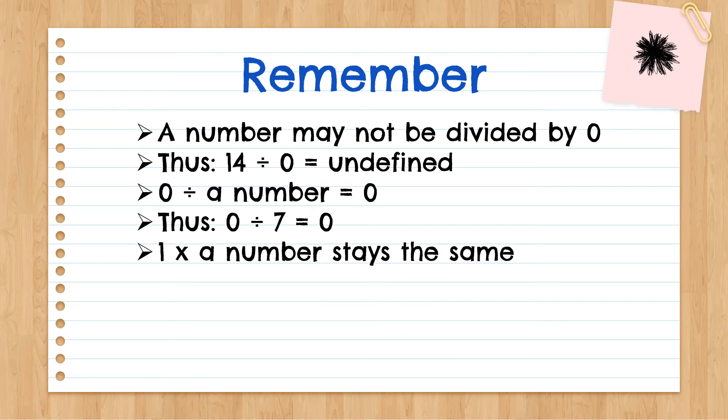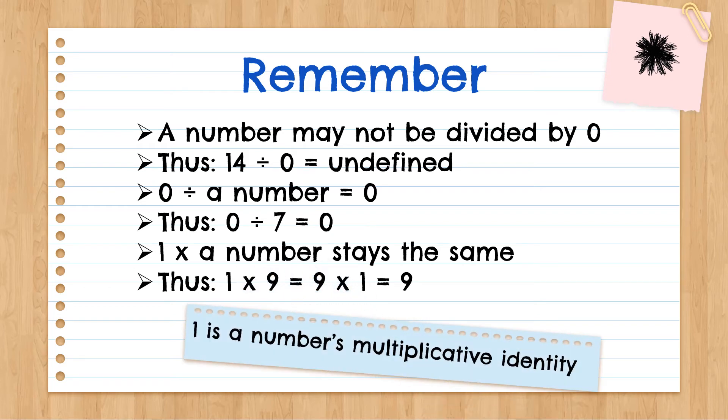One times a number stays the same. The example shows us that one times nine is the same as nine times one, which equals nine. And you have to remember that one is called a number multiplicative.